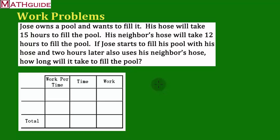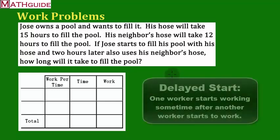Take into consideration this problem. Here's a pool owner and his name is Jose. There's two hoses that he could use to fill his pool. His hose will fill the pool in 15 hours. His neighbor's hose will fill the pool in 12 hours. So what I want to do is calculate how much time it's going to take when these two hoses work together to fill the pool.